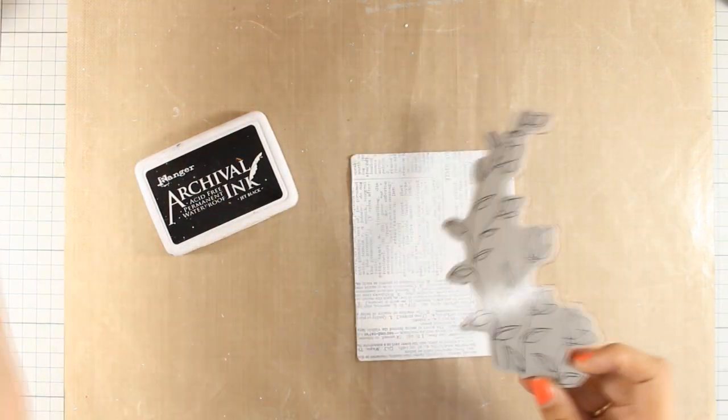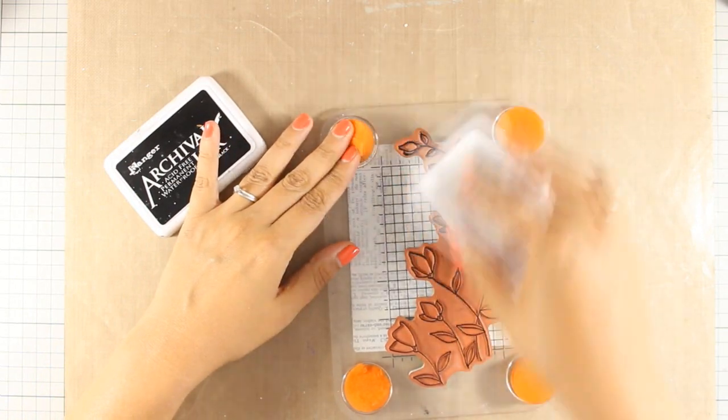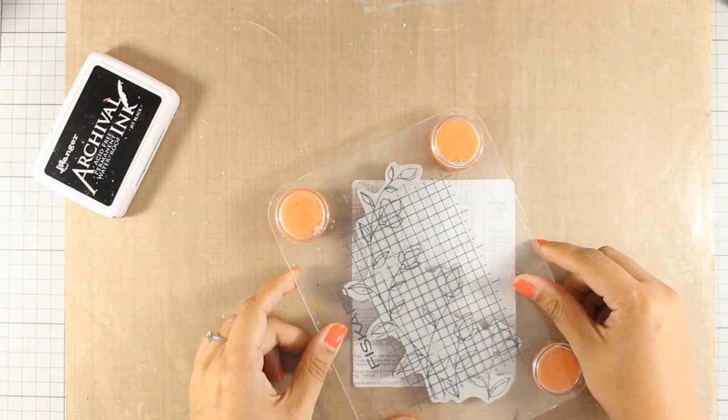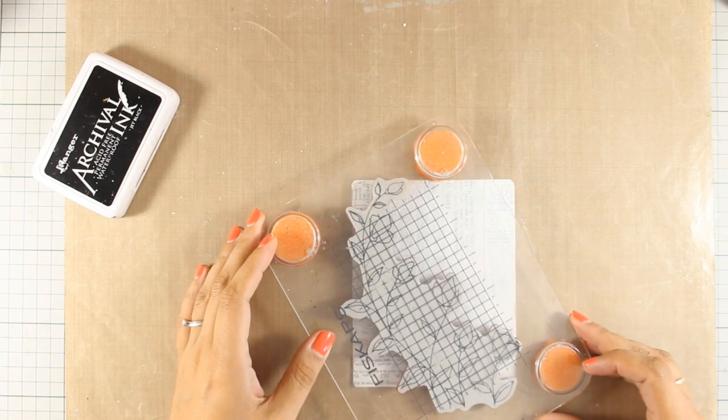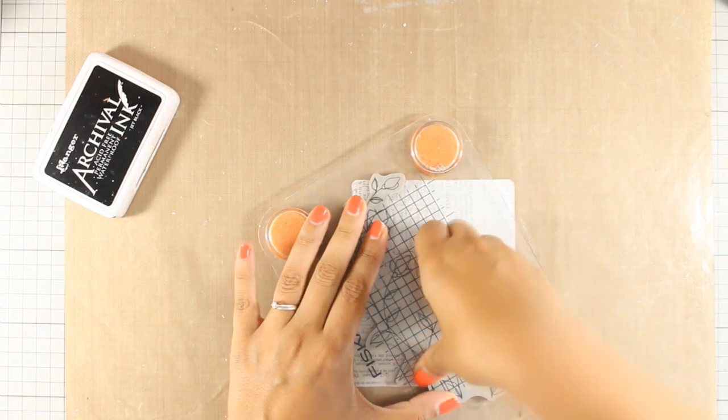Now I am going to work with this beautiful stamp. This is a stamp by Penny Black and it is called Softly. I am going to stamp it with archival ink. This is an ink that is permanent and it is not going to react with any of the mediums that I'm going to put on top. I am stamping the flowers upside down as if they are coming from the top.